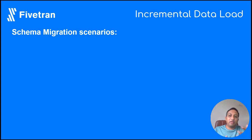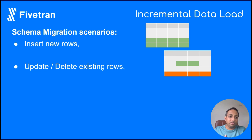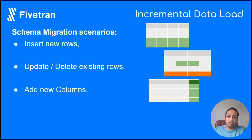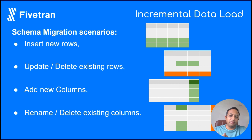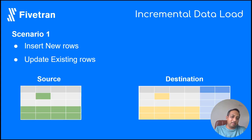The migration scenarios we'll cover include inserting new rows, updating or deleting existing rows, adding new columns, and renaming or deleting existing columns. For inserting or updating rows, the sync will happen exactly as-is. The green colored rows represent newly added rows, and the peach colored rows represent rows that have been inserted or updated into your destination.